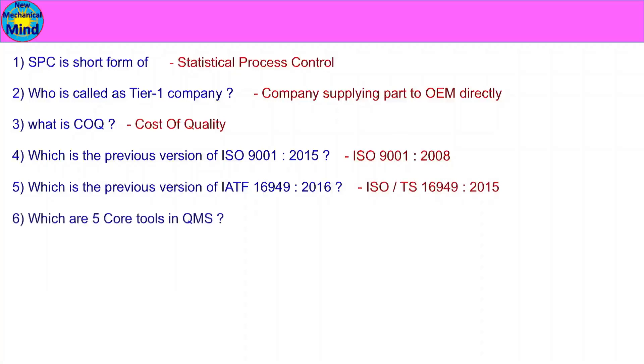Which are the 5 core tools in QMS — Quality Management System? The 5 core tools are: MSA, SPC, APQP, FMEA, and PPAP.